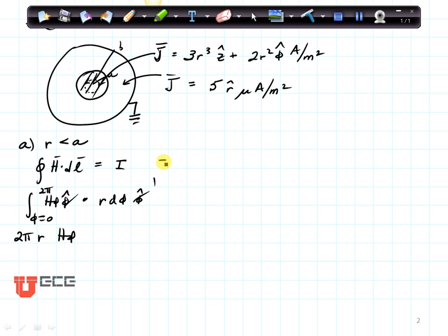Now let's find the total current enclosed. The total current enclosed is going to be given by the surface that's inside the contour we just did. So we're going to put our current, 3r³ z-hat, plus 2r² phi-hat, and dot that with the surface area that's represented right here. That is going to be r dr d-phi in the z-hat direction.